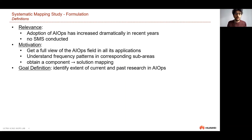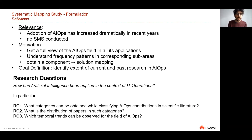To summarize it in one goal: our aim is to identify the extent of current and past research in AIOps. Posed as research questions, we ask: what categories can be obtained while classifying AIOps contributions in the literature? What is the distribution of papers in such categories? And are there temporal trends that can be observed in AIOps that may project into the future?